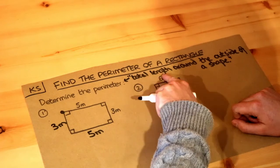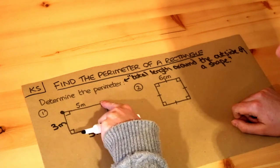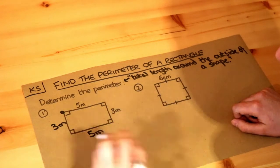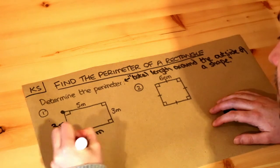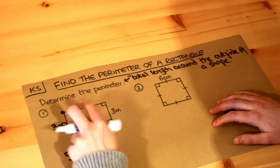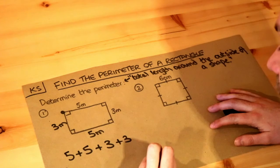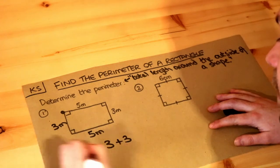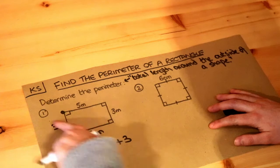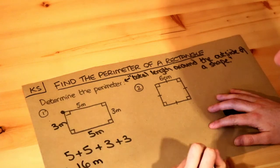And then the perimeter, we want the total length, so we're going to add the length of all the sides. So we just do 5 plus 5 plus 3 plus 3, and if we add that together, that would give us 16. And what's the unit? Well we're adding lengths in meters, so it's going to be 16 meters in total. So that is the perimeter.